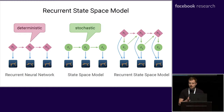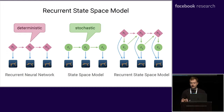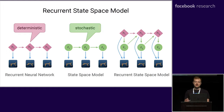More specifically, we combine stochastic and deterministic state elements. Deterministic states allow to carry information forward in time for many steps, while stochastic states allow to predict multiple futures as necessary for partial observability and model uncertainty. Our experiments show that combining both is critical for high planning performance.